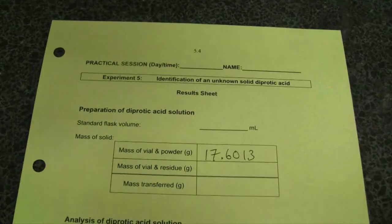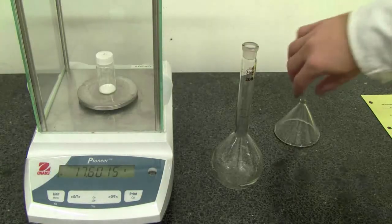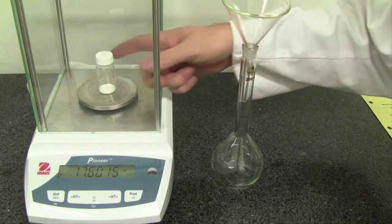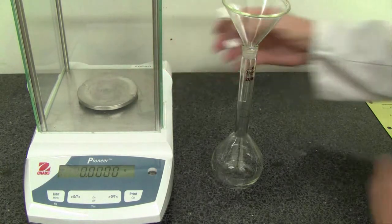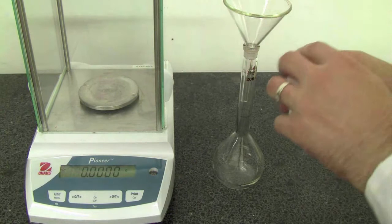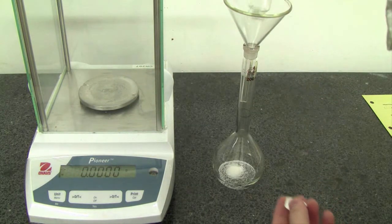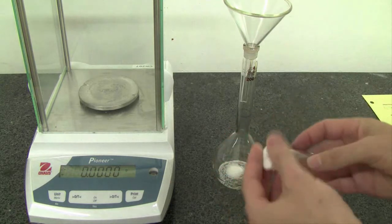Right, and back to the balance. You can pop your glass funnel in your standard flask, take your sample out of the balance. We're going to deliver that directly into the standard flask. So make sure that it all goes into the funnel or into the standard flask. Doesn't matter if there's a small amount of residue left in the vial, but don't spill any on the bench or anywhere else.